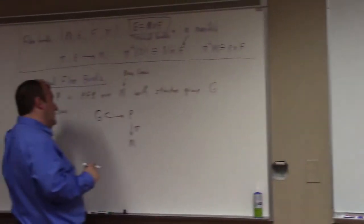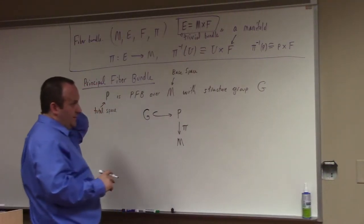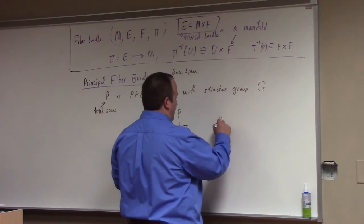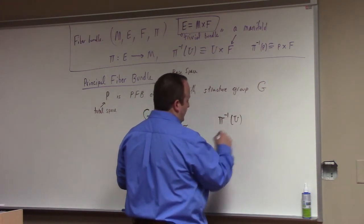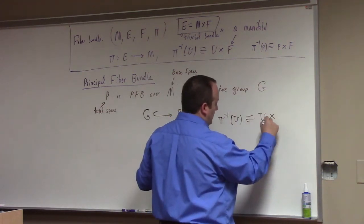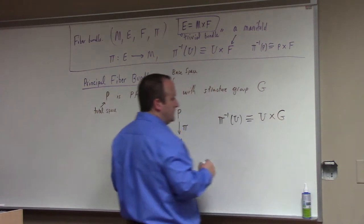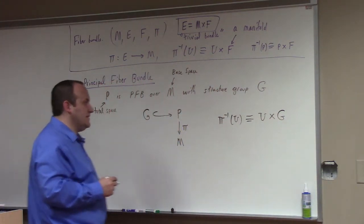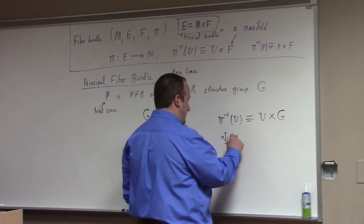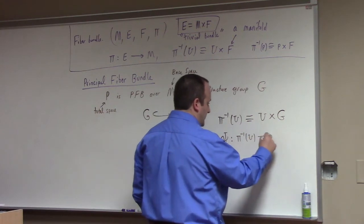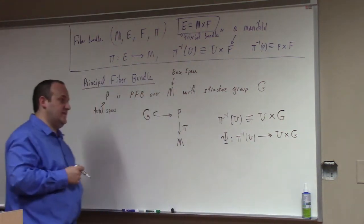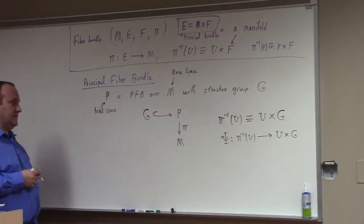The larger point here is that in a principal fiber bundle the fiber is the group. So actually if we look at pi inverse of u, with some subset of M, then that's going to be diffeomorphic to u Cartesian product with G. More explicitly, there is a mapping that goes from pi inverse of u to u Cartesian product with G and this map is a diffeomorphism which respects the pi map as well.